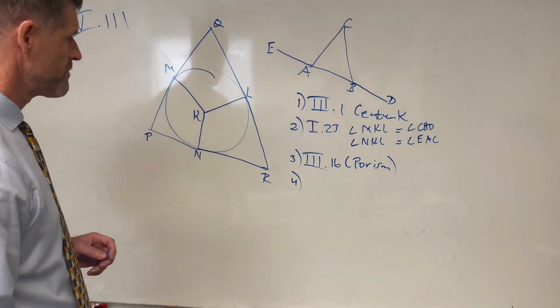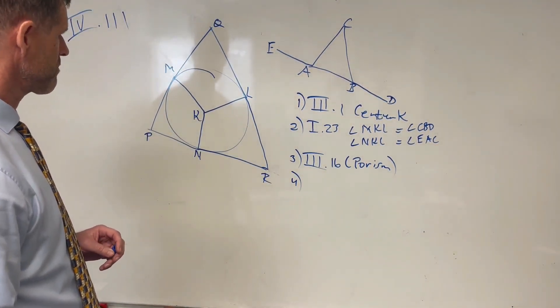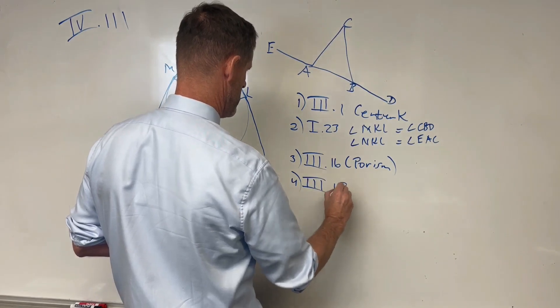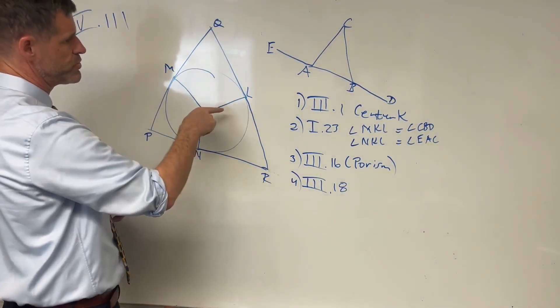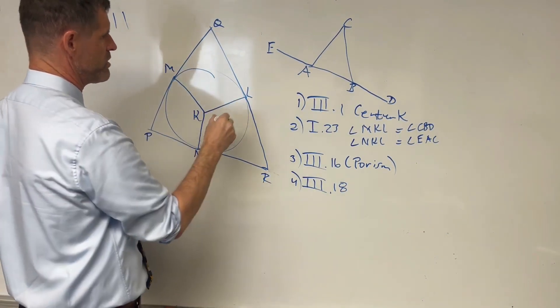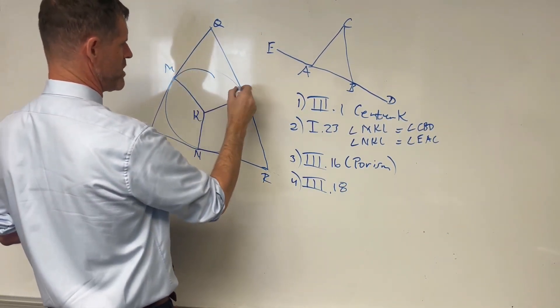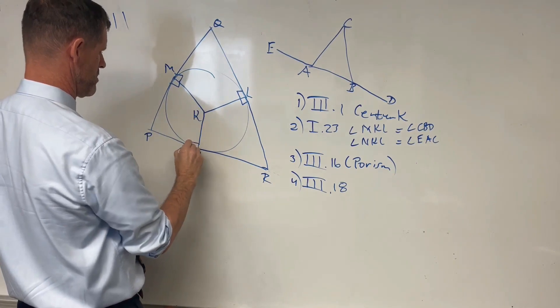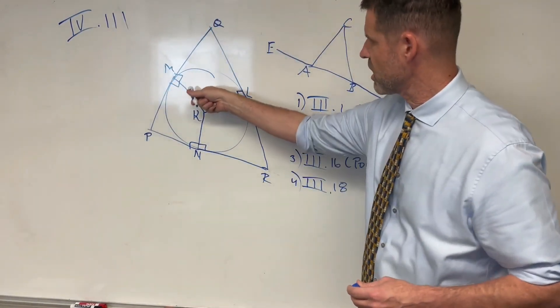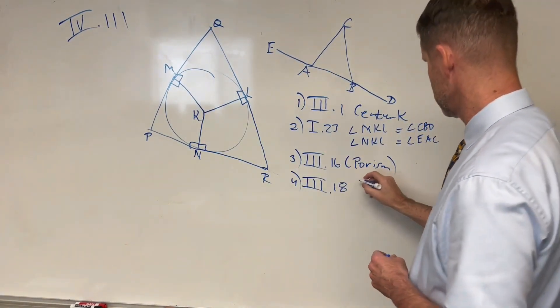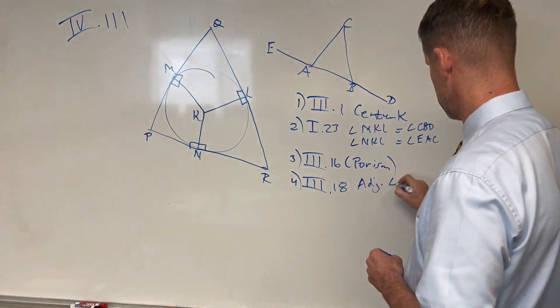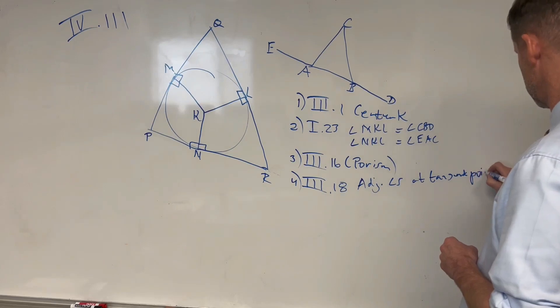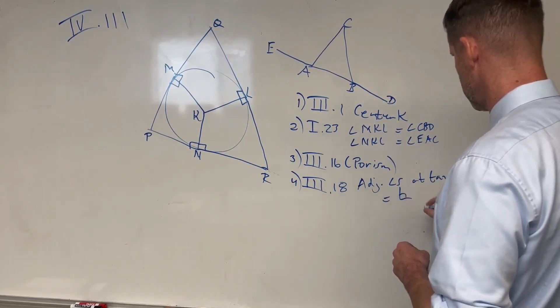And we also know from Proposition 18 of Book 3 that because we have radii drawn to the tangent point, we know that the adjacent angles of the tangent point will be equal to, each equal to a right angle. So we've got our right angles. I'll say each adjacent angle at tangent points will be a right angle. So adjacent angles at tangents equal right angles.